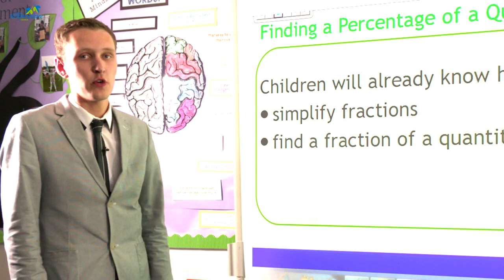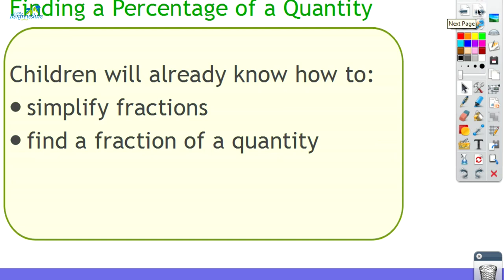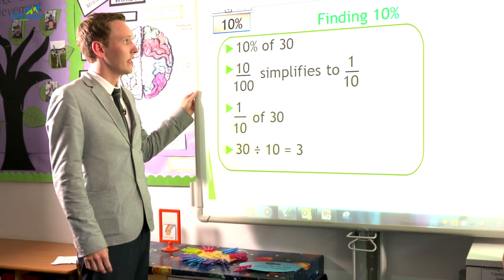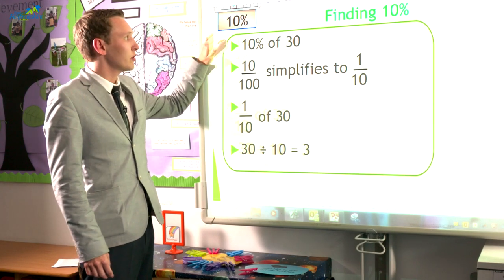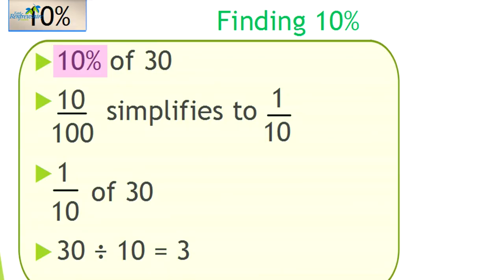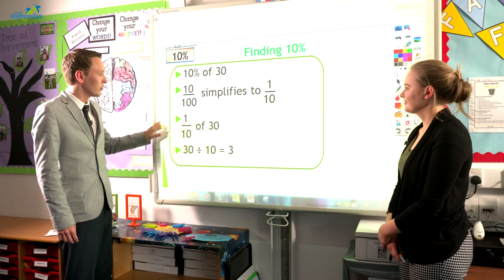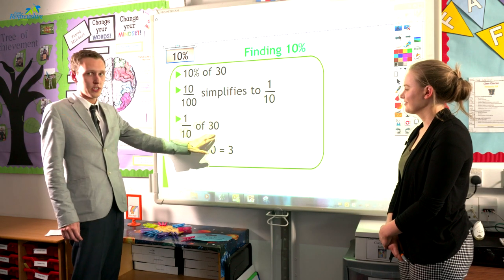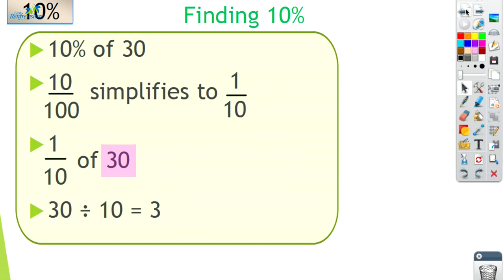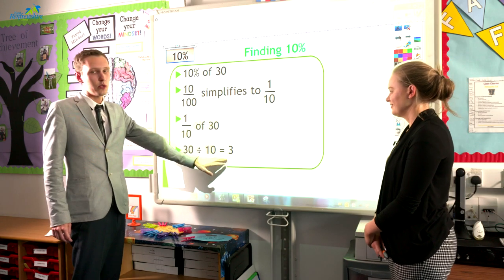In thinking about finding a percentage of a quantity, children will already have some prior knowledge — simplifying fractions and finding a fraction of a quantity using division and multiplication skills. For example, finding ten percent: ten percent of thirty. The children should relate ten percent to ten out of a hundred, and know that ten out of a hundred simplifies to one tenth. So one tenth of thirty is calculated by dividing thirty by ten, which equals three. So ten percent of thirty equals three.